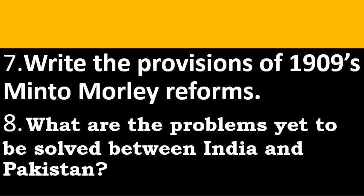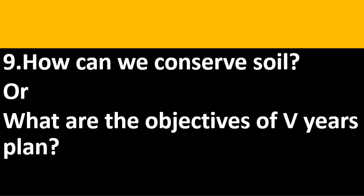Two-mark questions. Question 7: Write the provisions of the 1909 Minto-Morley Reforms. Question 8: What are the problems yet to be solved between India and Pakistan? Optional: How can we conserve soil? Or: What are the objectives of the Five Year Plan?